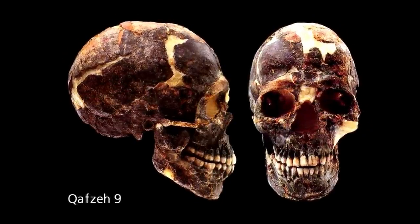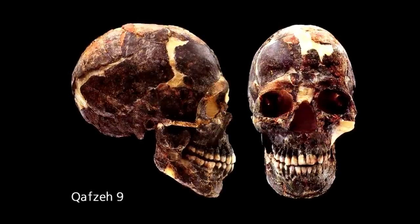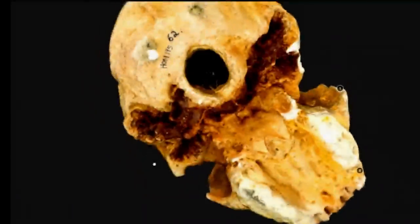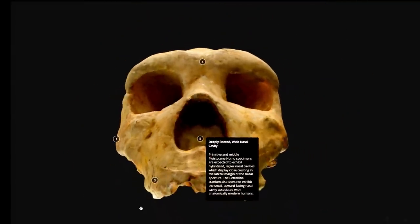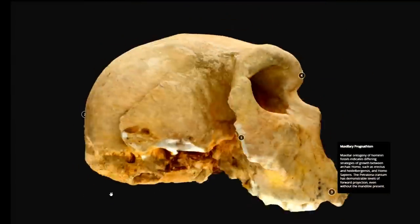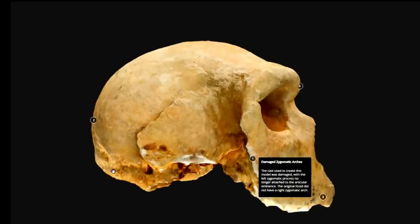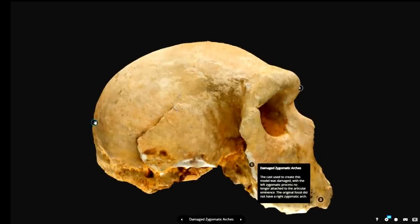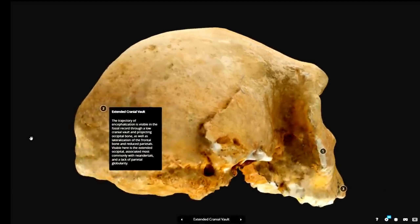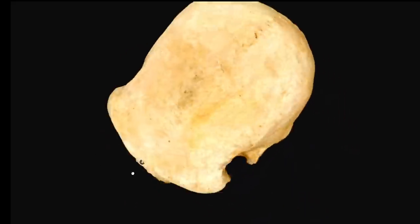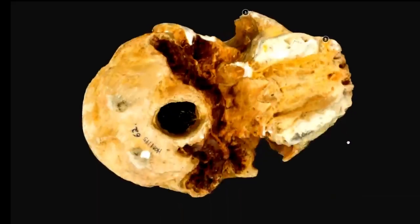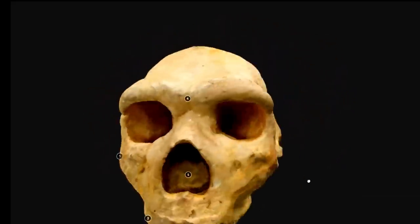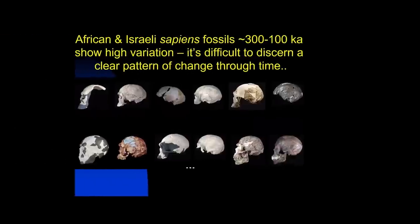Simply put, Neanderthals needed more energy than more gracile modern humans, who could use that extra energy for greater brain power, because Neanderthals had enormous muscles to support their enormous skeletons and skulls. The forebrain of modern humans, even the earliest ones, is typically larger than that of archaic people, allowing the brain to be located above rather than behind the eyes. This will typically result in a higher forehead and a smaller brow ridge, though not always.